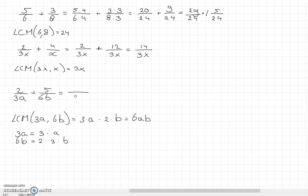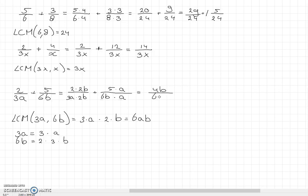We need to figure out what to multiply the denominators by to get 6ab. For 3a we multiply by 2b, so we multiply the numerator 2 by 2b as well, giving 4b over 6ab. For the other fraction, we multiply 6b by a, so we multiply 5 by a as well, giving 5a over 6ab. Adding them together gives us 5a plus 4b over 6ab.